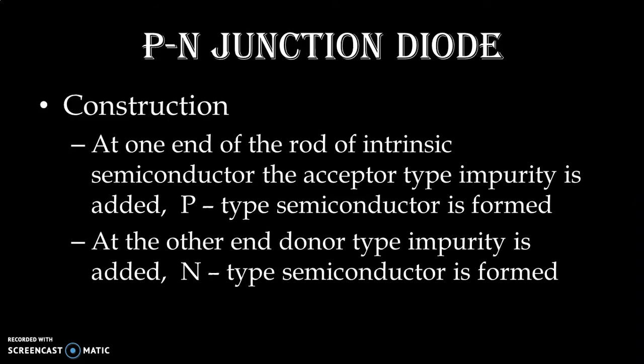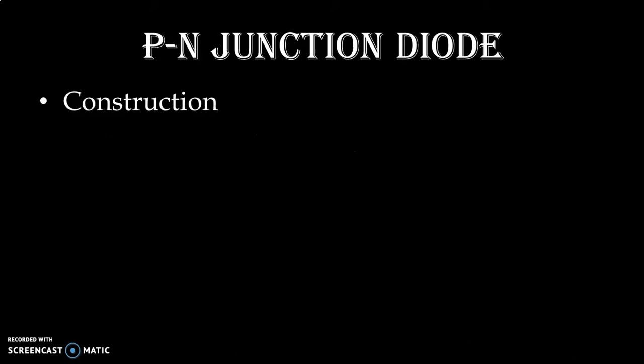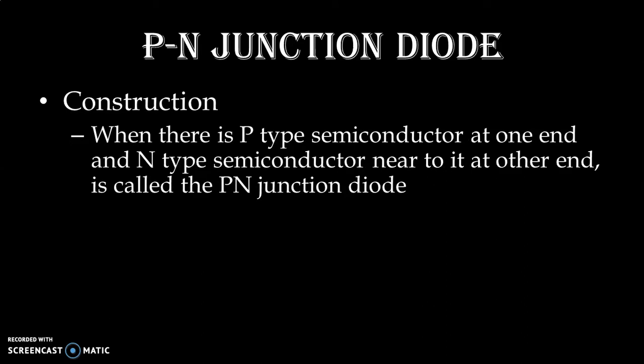At the other end, donor type impurity is added and N type semiconductor is formed. So on the same rod of intrinsic semiconductor, on different ends, we add different impurities. At one end, P type semiconductor is formed and on the other end, N type semiconductor is formed. When there is a P type semiconductor at one end and an N type semiconductor at the other end, then it is called the PN Junction Diode.